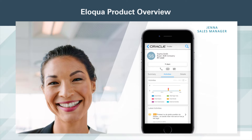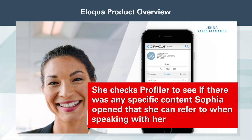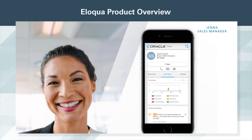On the road, Jenna receives an email alert that Sophia is on the website again. She checks Profiler to see if there was any specific content Sophia opened that she can refer to when speaking with her. She can easily review Sophia's information because the exact customer journey and content interactions are updated in real time.